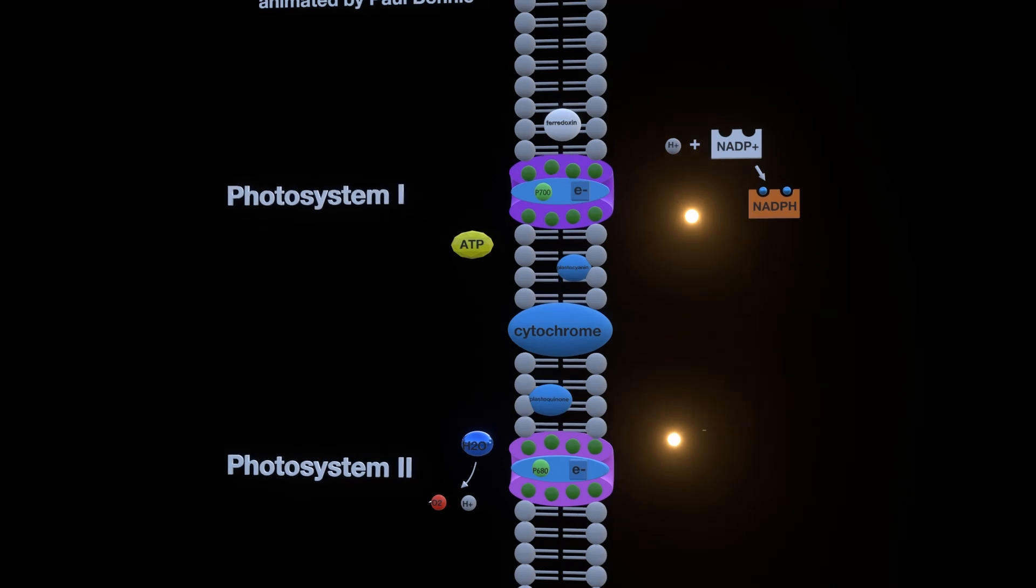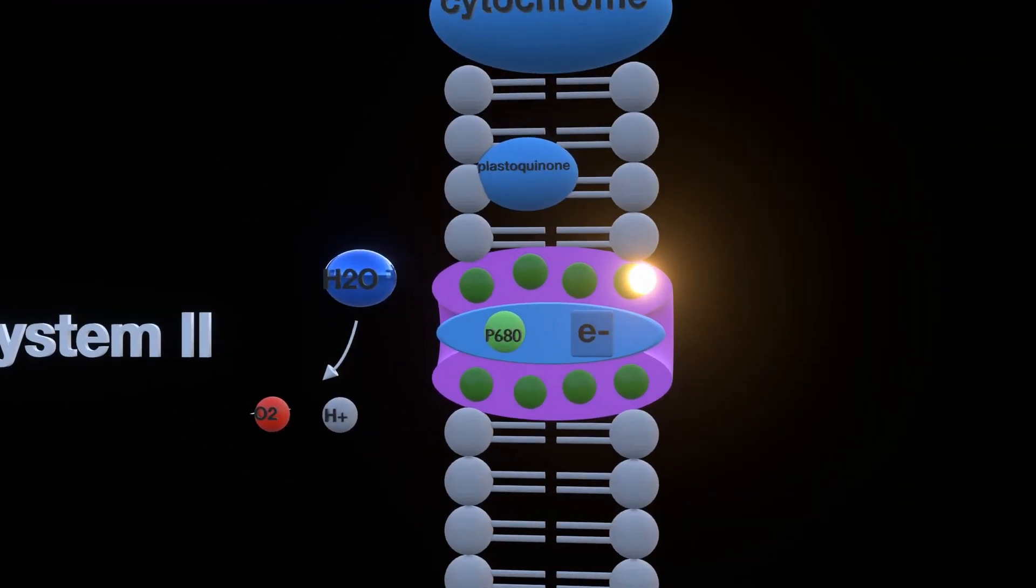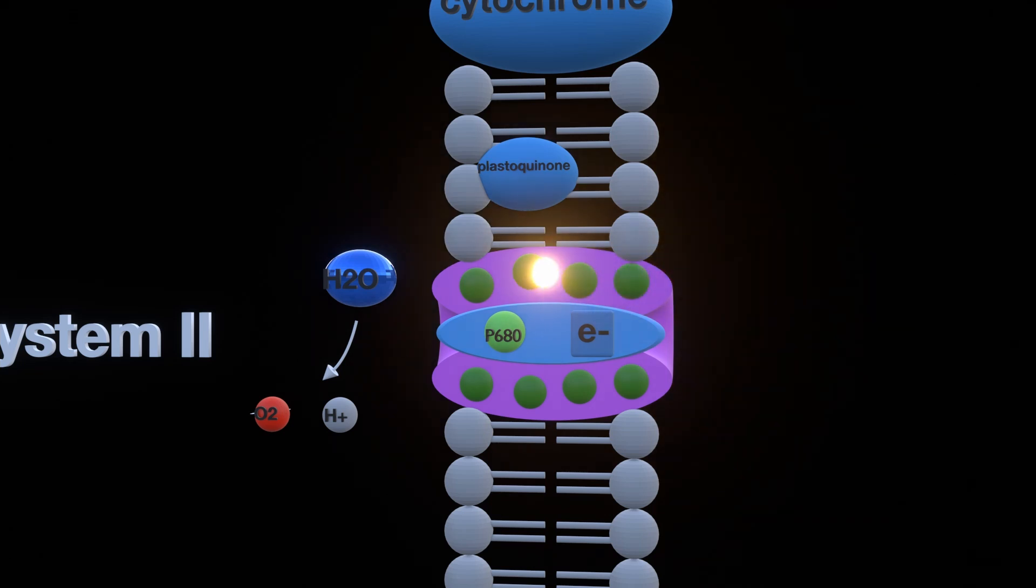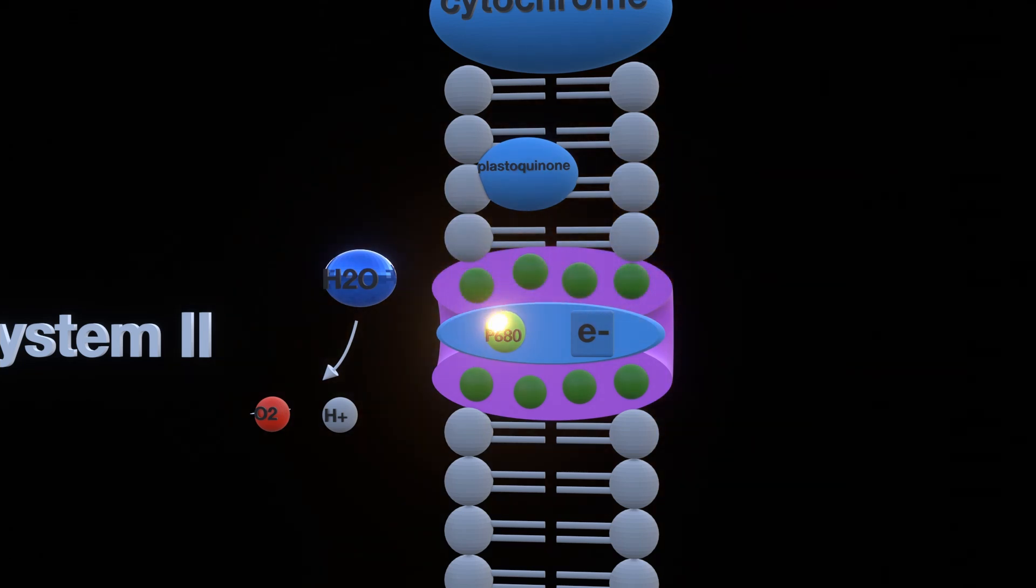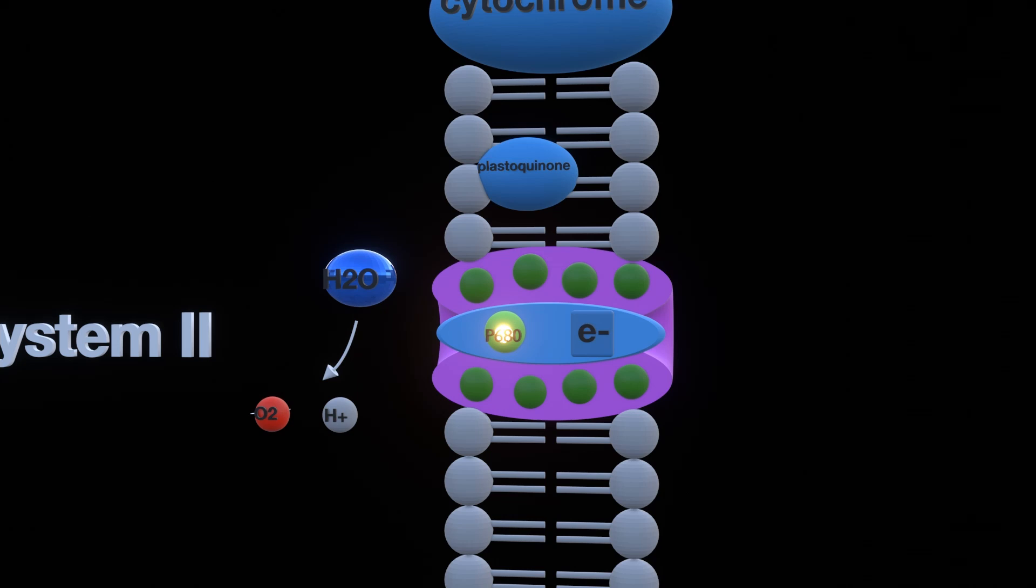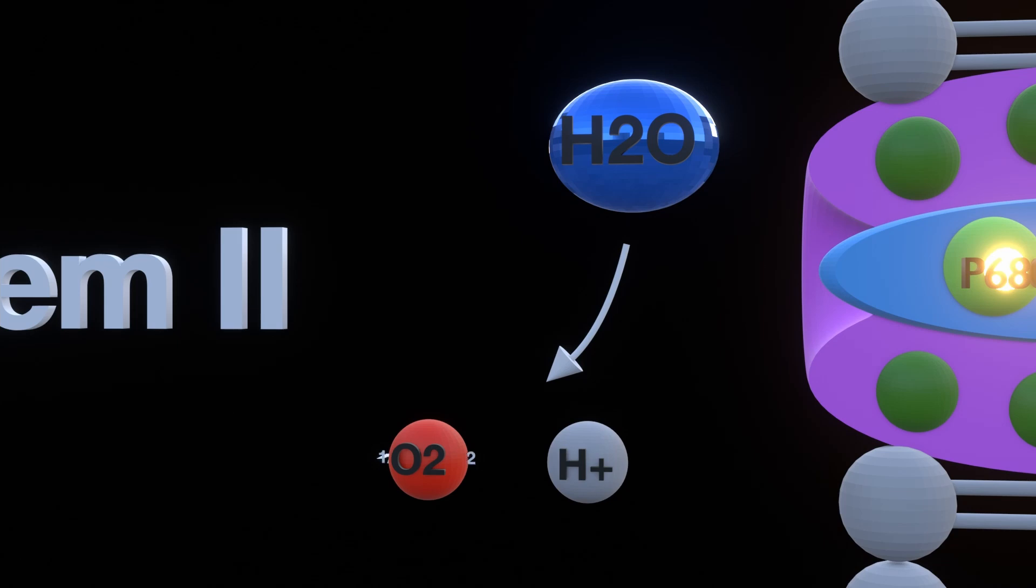The process begins when a photon hits photosystem 2 where it is absorbed by the light harvesting complexes. It bounces from one of these to another until it hits p680 at the end. p680 absorbs light at 680 nanometers, which is basically red light, and to do this it needs an electron which it gets from the water molecule which is split into oxygen and hydrogen.